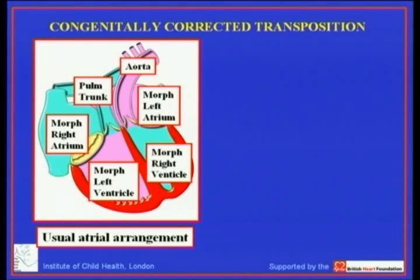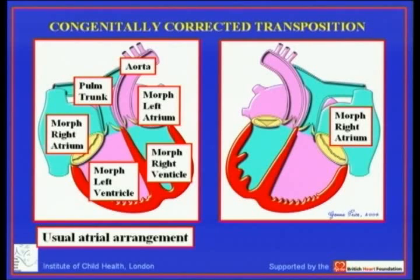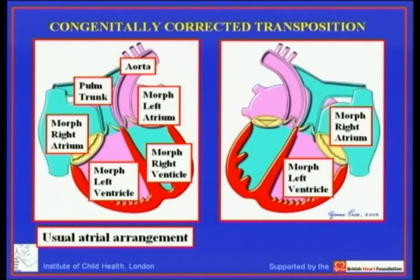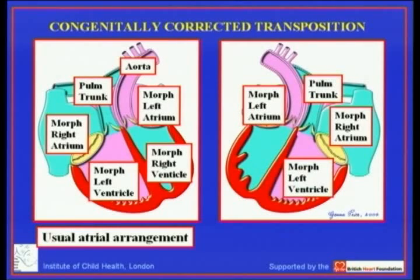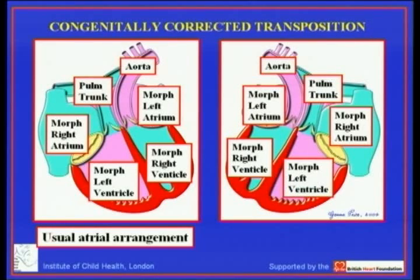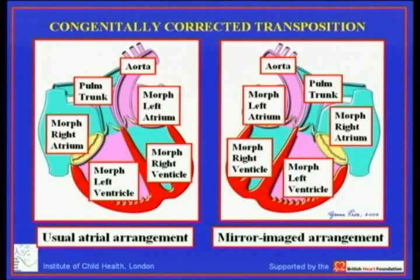We can have the same arrangement with mirror imagery of the atrial chambers. The morphologically right atrium is now left-sided and, because of discordant atrioventricular connections, joins to a left ventricle which is also left-sided, giving right-hand ventricular topology. The pulmonary trunk returns blood to the lungs; it returns to the right-sided left atrium, then to the right-sided morphologically right ventricle, and to the aorta — which in most instances is right-sided. This is detransposition, which is not always the same as regular transposition.